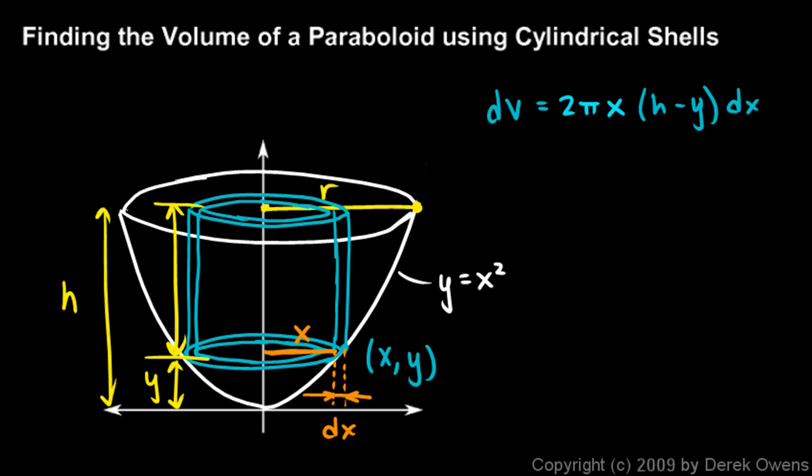So now notice one thing here. We have a dx, and we have an x there, and we have a y, and that's not good. We need our function here to be a function of x because we have a dx right there. So I need to put in some function of x there for y, and that's easy in this case because y equals x squared. So I'll just rewrite this as dV is 2πx times (h minus x squared) dx. Now that's the case because this particular equation was y equals x squared. If we had a different curve, we'd have a different expression substituted in right there.